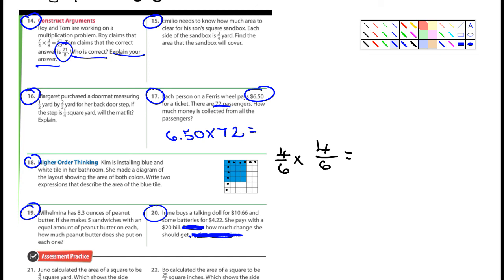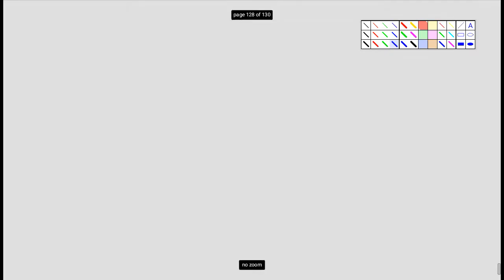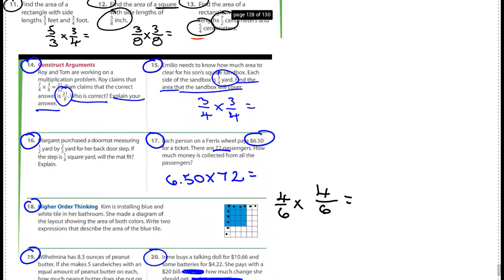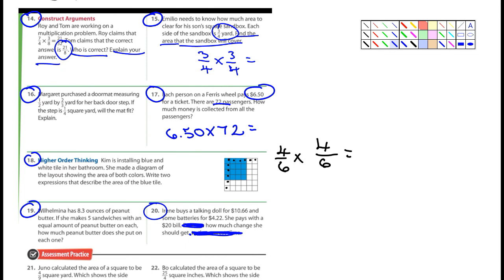Number 15, Emilio needs to know how much area to clear for his son's square. There's a clue. Sandbox. Each side of the sandbox is three-quarters of a yard. Find the area of the sandbox. Find the area. Find the area of the sandbox we'll cover. It's going to be three-quarters times three-quarters. That'll give you the area because, remember, length times width. Number 16, Margaret purchased a doormat. And she, seven of nine beams into Star Trek Picard. Whatever that's about. I don't know. Okay. Whoops. I hope that didn't end my recording. Nope. Didn't. Good. Did that show up on your screen also? That little notification? Okay. All right. Where was I? Number 16.